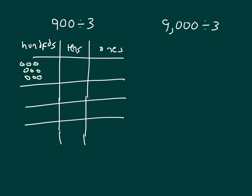And then we're dividing by 3, so we'll make 3 groups here. And then we can go ahead and distribute these into those groups. 1, 2, 3, 3, 6, 9. So within each of those groups is 3 hundreds.